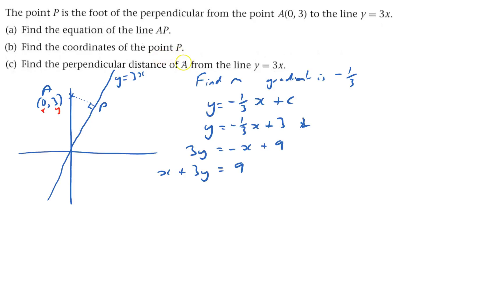Find the coordinates of the point P. That's here is where those two lines cross. So we've got to solve this one here and y equals 3x. So I'm going to substitute y equals 3x in there. And that gives me x plus 3 lots of 3x equals 9. So that's 10x equals 9. And so x equals 0.9.